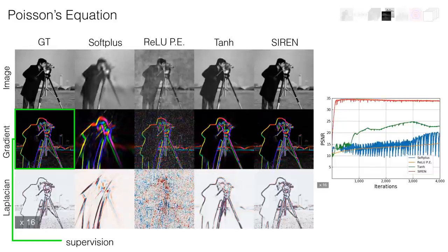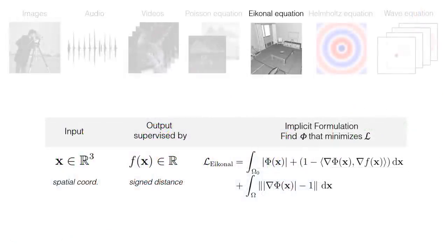Interestingly, one can also monitor the second order derivatives visualized through the Laplacian of the image and of the network. SIREN is the only architecture that accurately captures the second order derivatives. The ability of SIREN to fit a signal via its derivative can be leveraged across a diverse set of applications to solve challenging boundary value problems.